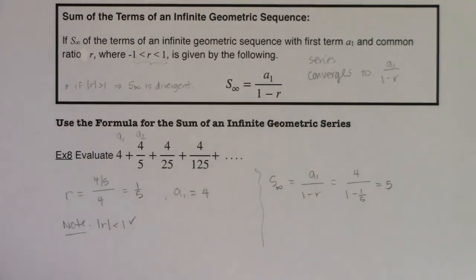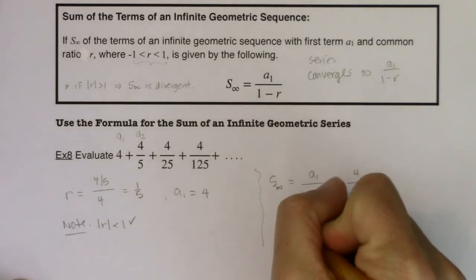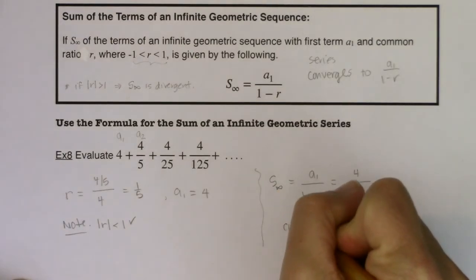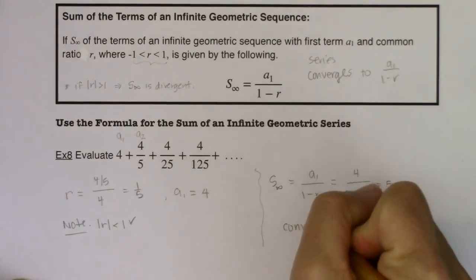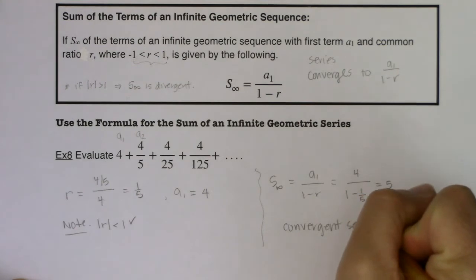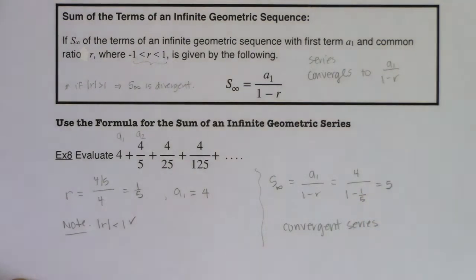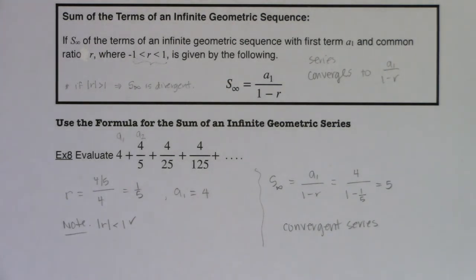In this example, we would call it a convergent series — it converges to the number 5. We'll practice this in example 9, where we'll work more with convergent versus divergent series. I'll see you there.